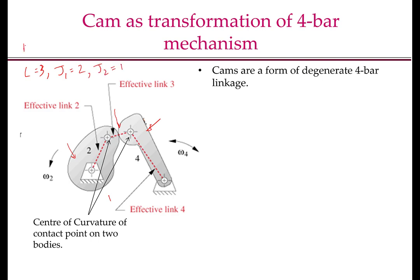So my degrees of freedom, according to Grubbler's formula, is 3 times (L-1) minus 2J1 minus J2, which gives me 1.